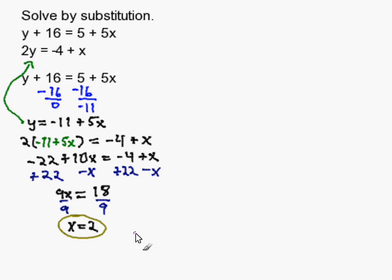Now remember, I'm solving for both x and y. So to solve for y, I'm going to substitute x into my equation. Now I'm going to choose the equation where y is by itself because all I have to do is substitute in for x.